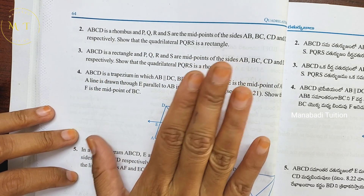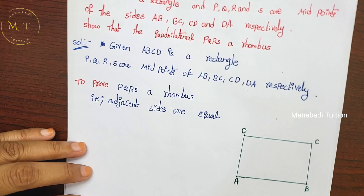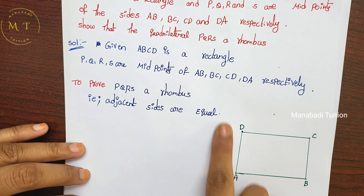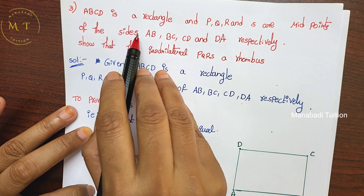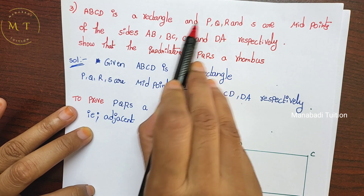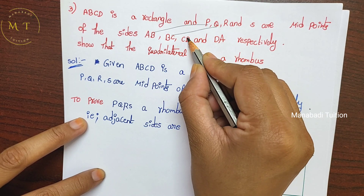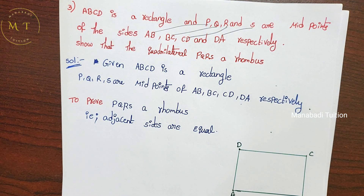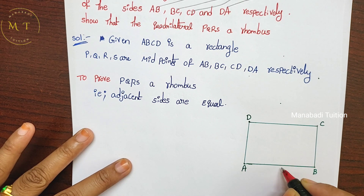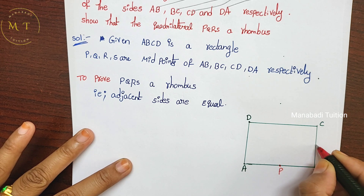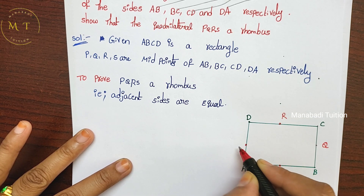So first draw the diagram. Draw rectangle ABCD. Mark the midpoints on the sides: P on AB, Q on BC, R on CD, and S on DA. So draw the diagram with the midpoints marked.